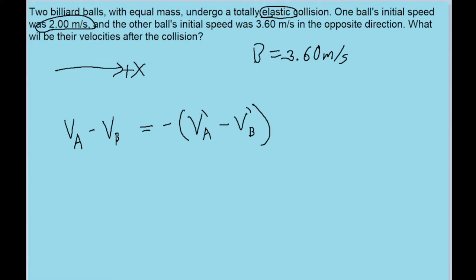But because we have both of the initial speeds, but neither of the final speeds, we can only use this equation right now to solve for either of the final speeds individually in terms of the other one. So in the case of this problem, V_A minus V_B is just going to be 2 meters per second minus negative 3.6 meters per second. So the negatives cancel out, and we're basically adding the magnitudes.